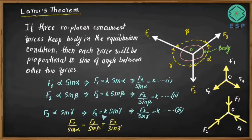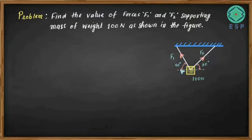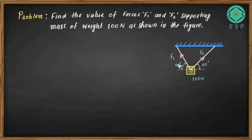This is the final expression for Lamy's theorem, applicable for three coplanar concurrent forces. Let's take one example to understand it properly. We need to find the forces F1 and F2 supporting a mass of weight 100 newtons. F1 acts at 45 degrees with the horizontal and F2 acts at 30 degrees with the horizontal. Using Lamy's theorem will be simpler than static equilibrium equations with two unknowns.